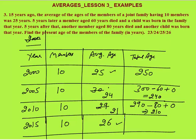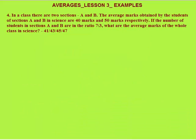Next question: in a class there are two sections A and B. The average marks obtained by students of section A and B in science are 40 and 50 respectively. The number of students are in the ratio 7 to 3. Find the average marks of the whole class. Since the ratio is 7 to 3, convert to actual numbers by multiplying by x: number of students in A is 7x and in B is 3x. Average marks in section A is 40 and section B is 50.